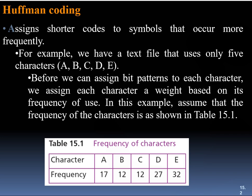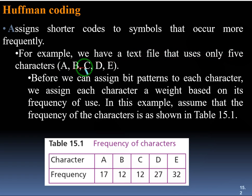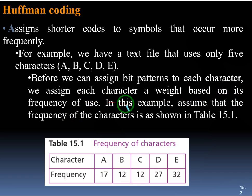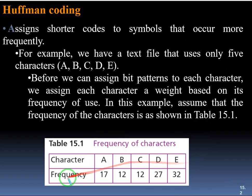Huffman coding assigns shorter codes to symbols that occur more frequently. For example, we have a text file that uses only five characters: a, b, c, d, and e. Before we can assign a bit pattern to each character, we need to assign each character a weight based on its frequency of use. In this example, the frequency of each character is: a=17, b=12, c=12, d=27, and e=32.